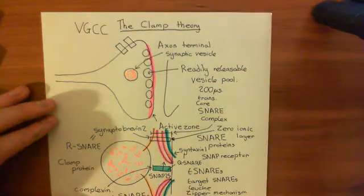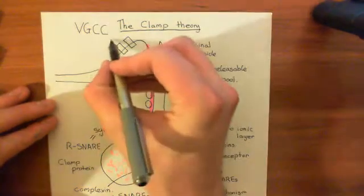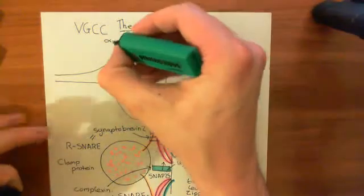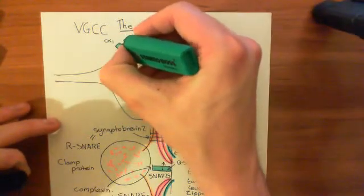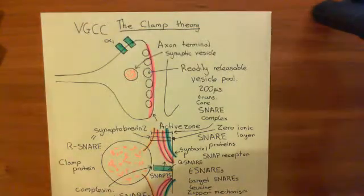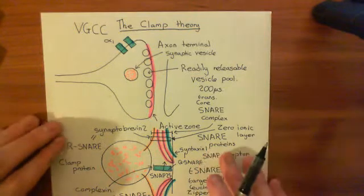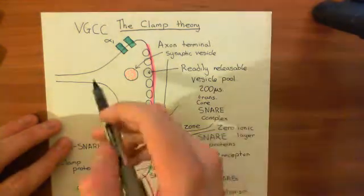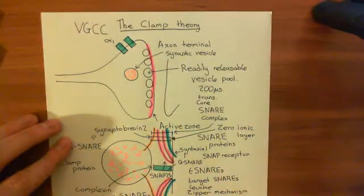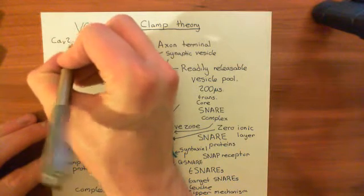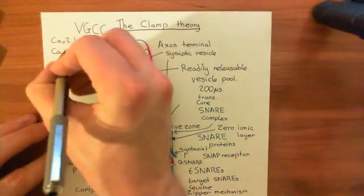Voltage-gated calcium channels consist of multiple subunits. The main subunit, which makes up the pore-forming unit, is known as the alpha-1 subunit. There are many different genes which encode for alpha-1 subunits of voltage-gated calcium channels — ten overall. Only two of them are used in neuronal axon terminals: the CAV2.1 gene and the CAV2.2 gene.